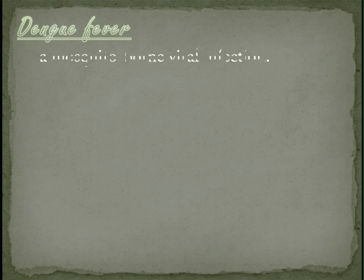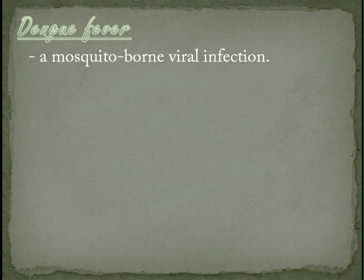The first in our list is dengue fever. Dengue is a mosquito-borne viral infection. There are four dengue virus serotypes, which means there is a possibility to be infected four times. Many dengue virus infections can cause an acute flu-like illness, and occasionally, it can develop into a potentially life-threatening complication called severe dengue.